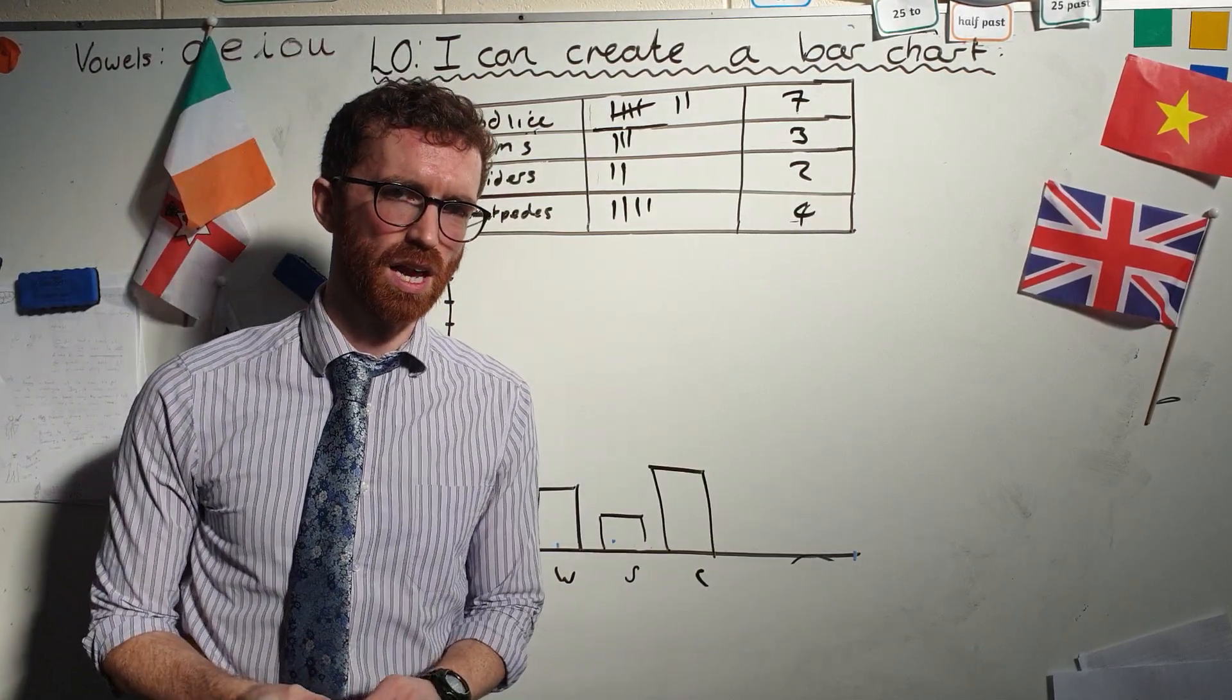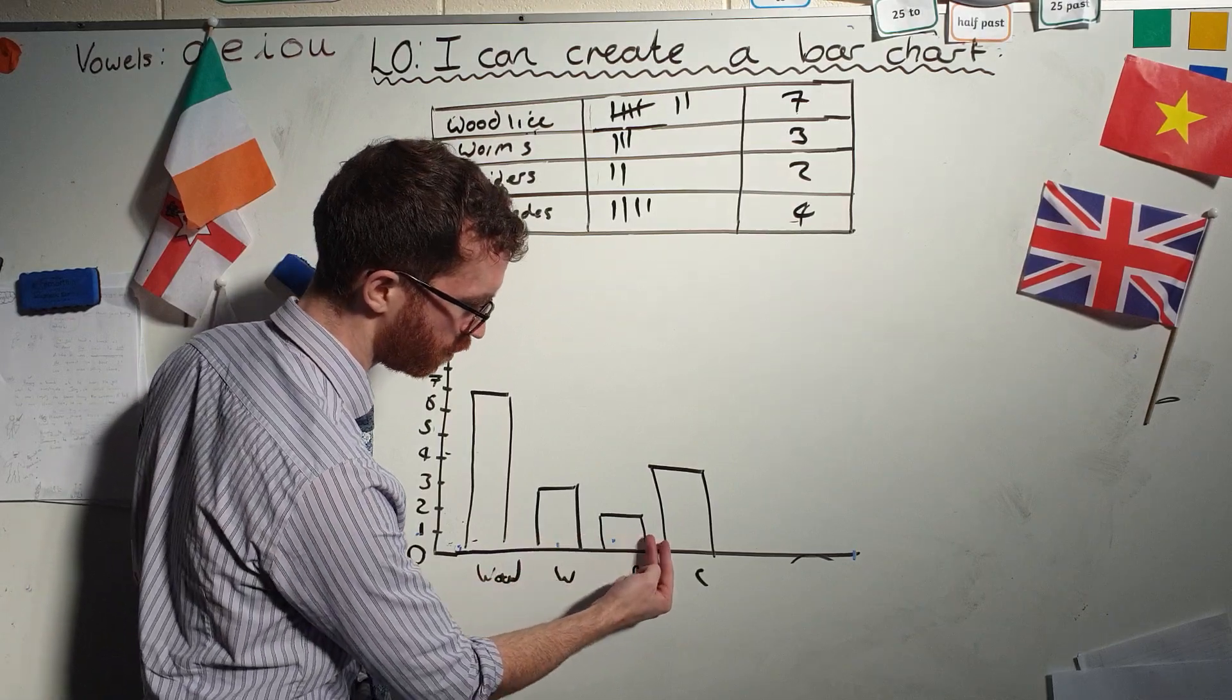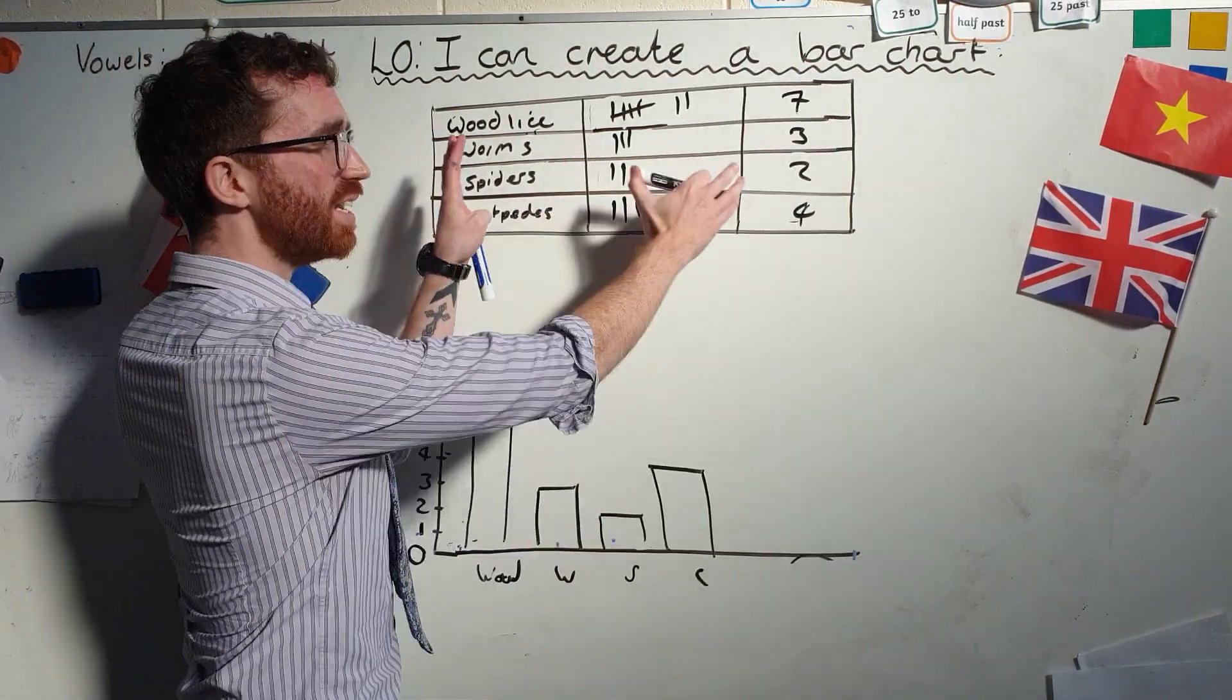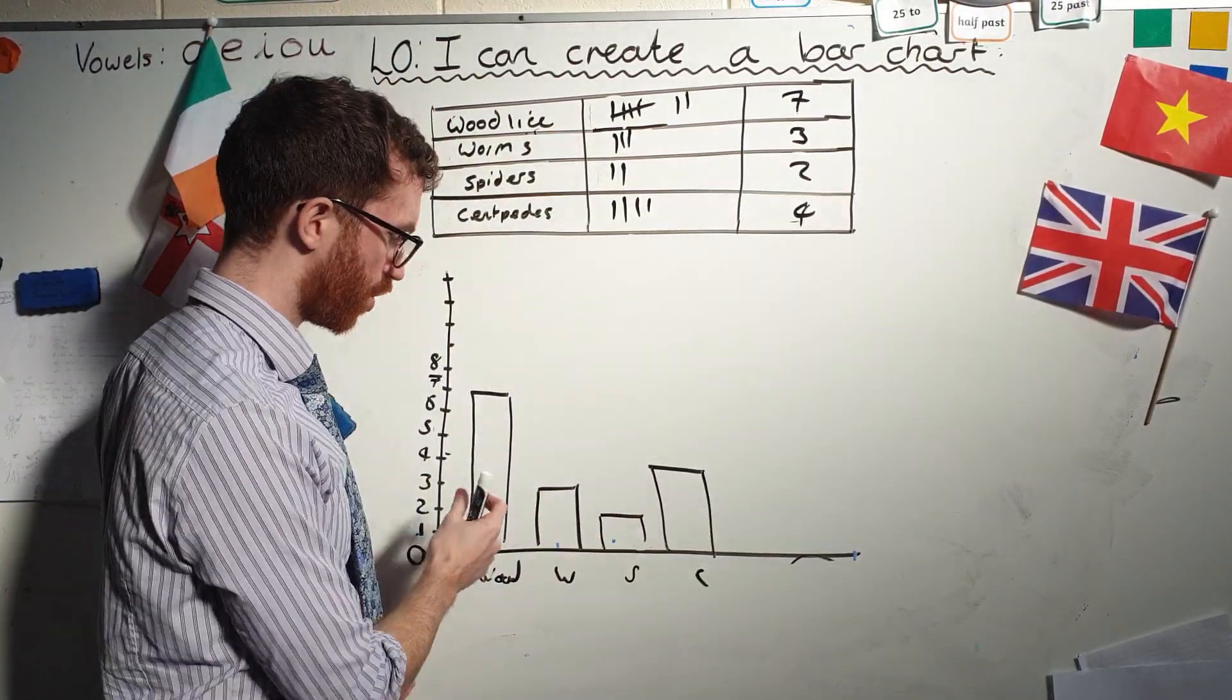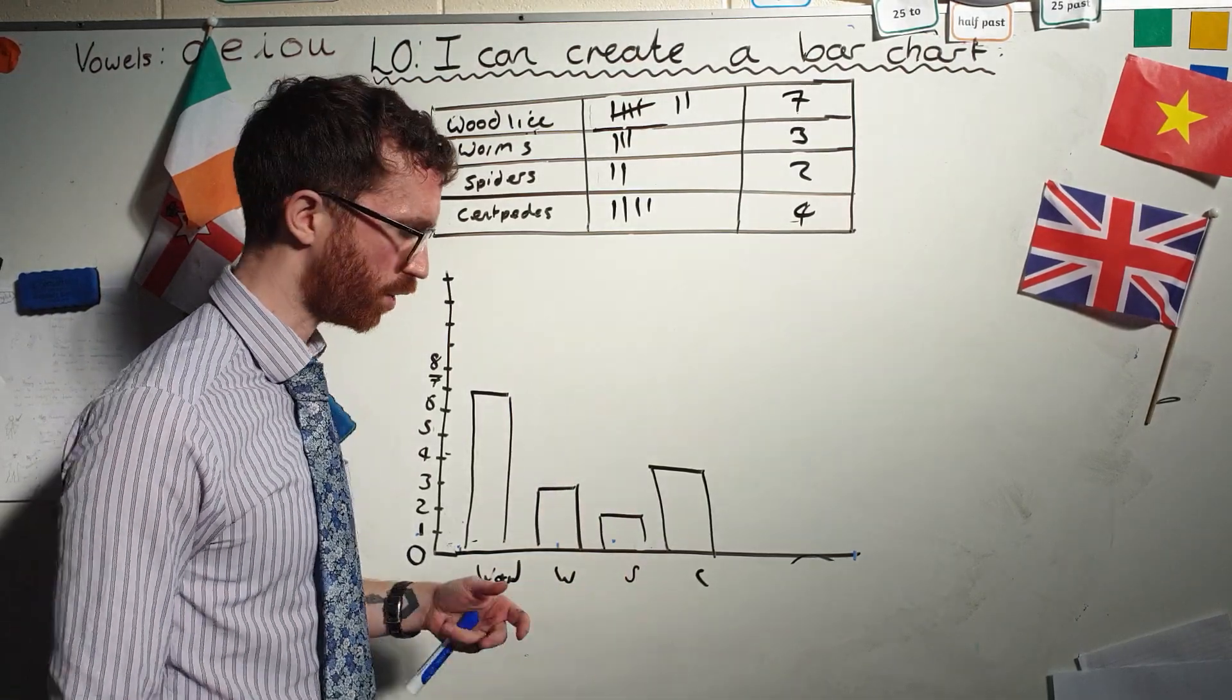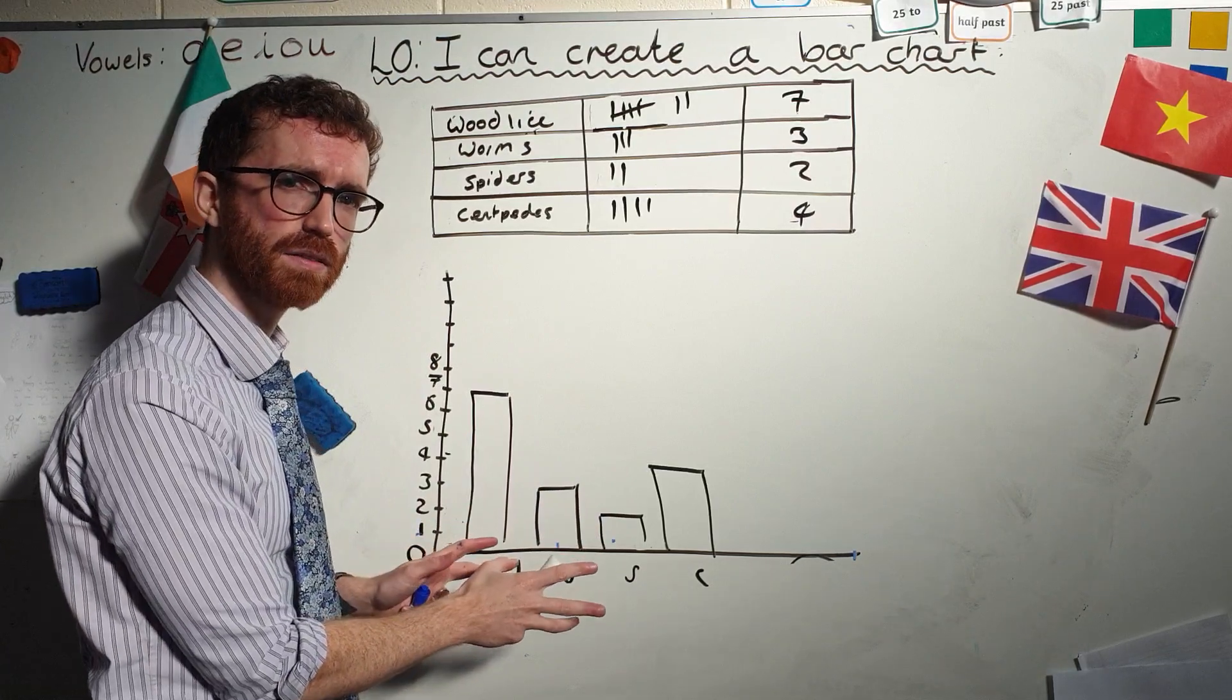Now it does not look great because I haven't used a ruler, but I have tried my best to leave equal space in between each one. What I've done is I've taken my data and I've interpreted it on a bar chart. Now anyone can see that straight away, there's definitely more wood lice. That is really obvious to anyone. It doesn't matter how old they are, what country they come from. The information is now really clear. If they didn't understand that, they must understand it.